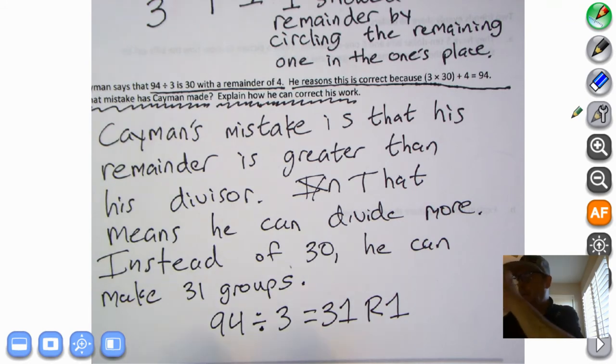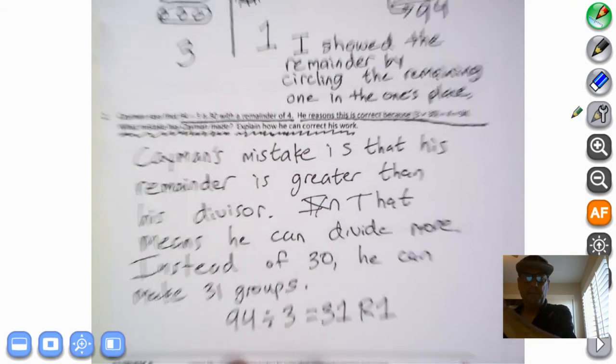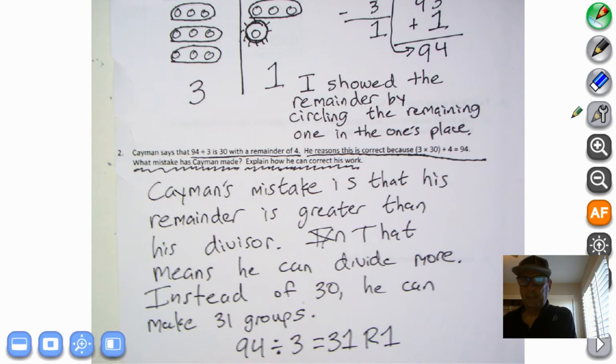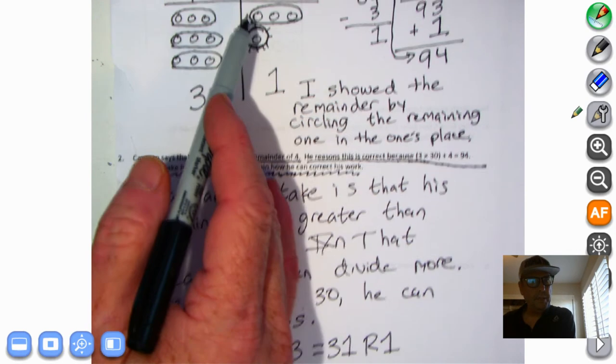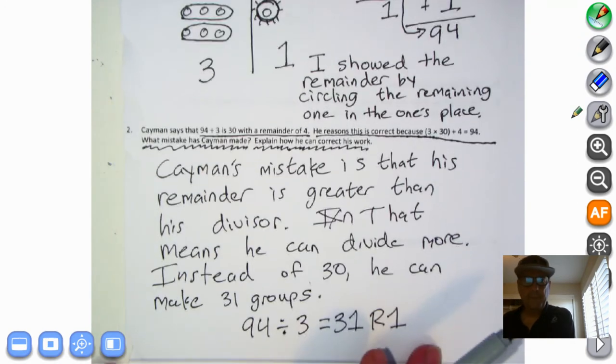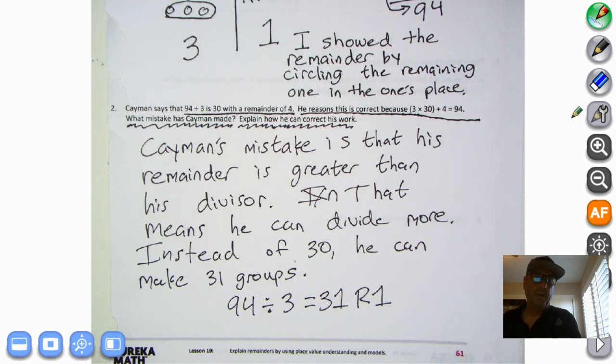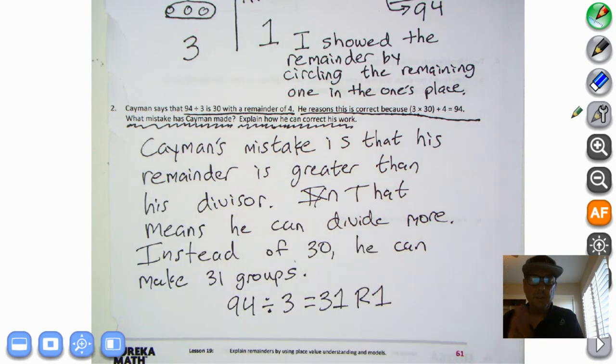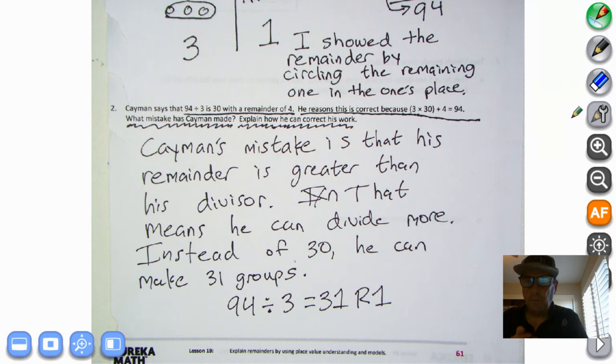94, as we proved above, divided by 3 equals 31 remainder 1. So you see what he did, he stopped when he could divide some more. He said okay it's 30 with a remainder of 4, but no, he could group another group of 3 here so it'd be 31. So Cayman's mistake is that his remainder is greater than his divisor. That means he could divide more. Instead of 30 he can make 31 groups, and 94 divided by 3 equals 34 with a remainder of 1. And notice Mr. Leggett starts sentences with capitals and ends them with periods, that's how we should do it.